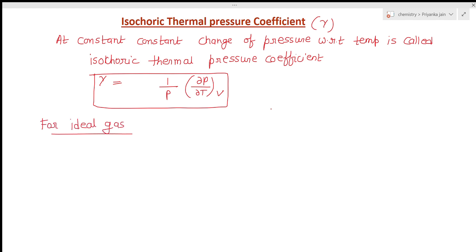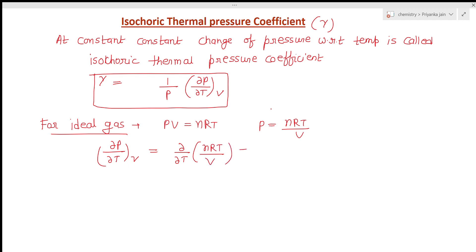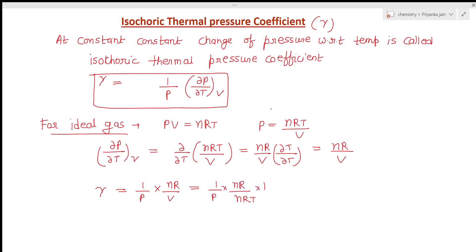For ideal gas, PV = nRT, so P = nRT upon V. Del P upon del T at constant volume: volume is constant so nR upon V goes outside, and del T upon del T = 1, giving nR upon V. Putting this value: gamma = 1 upon P times nR upon V. Substituting V = nRT upon P, we get gamma = 1 upon T. So for an ideal gas, gamma equals 1 upon temperature.